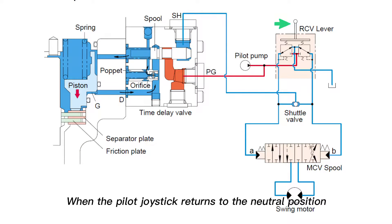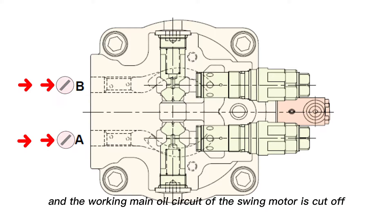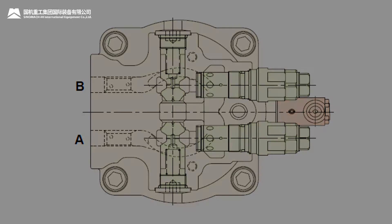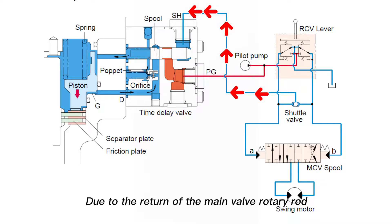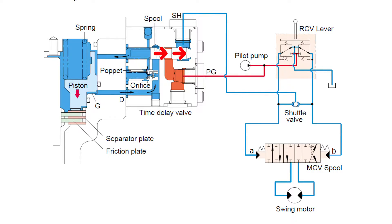When the pilot joystick returns to the neutral position, the rotary valve rod of the main valve returns to the neutral position and the working main oil circuit of the swing motor is cut off. Due to the return of the main valve rotary rod, the pilot pressure at the SH port of the time delay valve disappears, and when the brake release valve core returns, the pilot oil at the PG port is cut off.